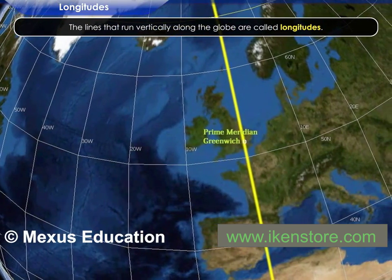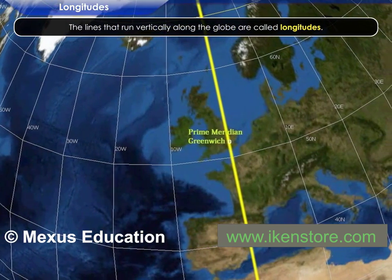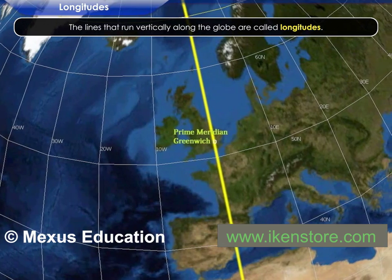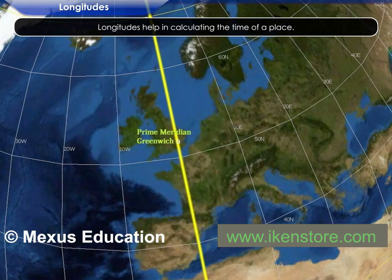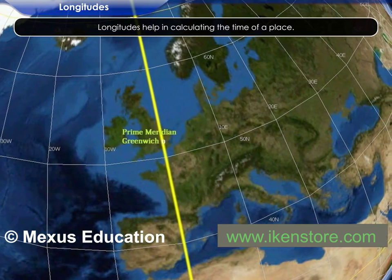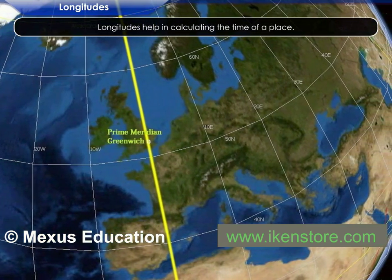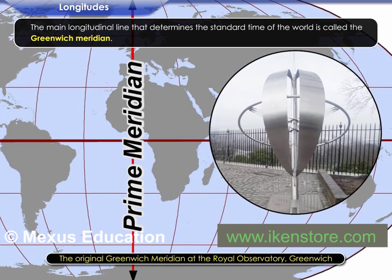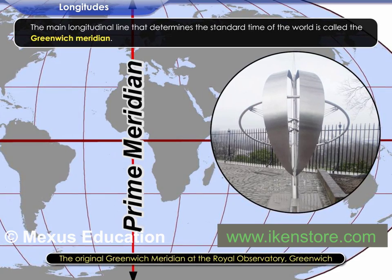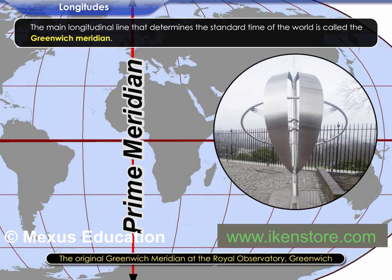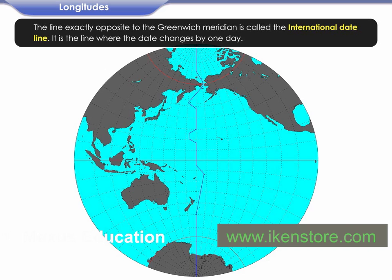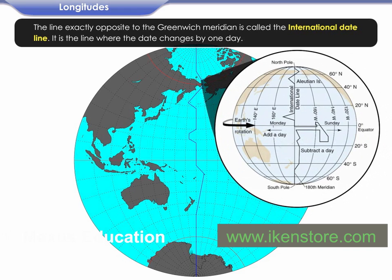The lines that run vertically along the globe are called longitudes. Longitudes help in calculating the time of a place. The main longitudinal line that determines the standard time of the world is called the Greenwich Meridian. The line exactly opposite to the Greenwich Meridian is called the International Date Line. It is the line where the date changes by one day.